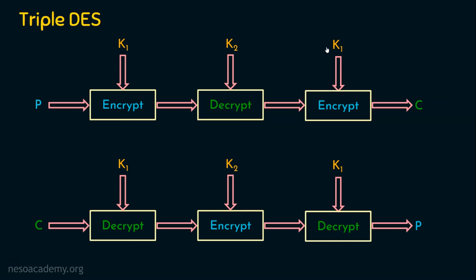Even triple DES is vulnerable to the meet in the middle attack. You can apply the same logic used for double DES — if the attacker knows a particular plaintext and ciphertext combination, he can break the security offered by triple DES. Additionally, meet in the middle attack is not the only drawback of multiple encryption like double DES or triple DES. There is one more drawback: the plaintext goes through the encryption algorithm, then decryption, then encryption again — a much lengthier process compared to single DES — so obviously when we go for multiple encryption, the process will be slower.